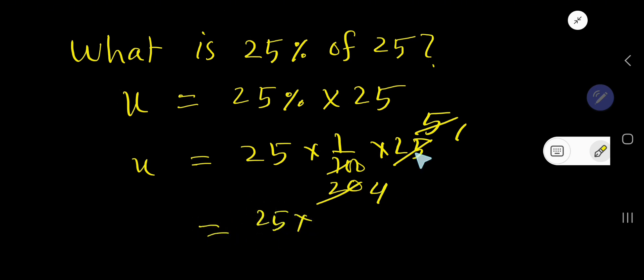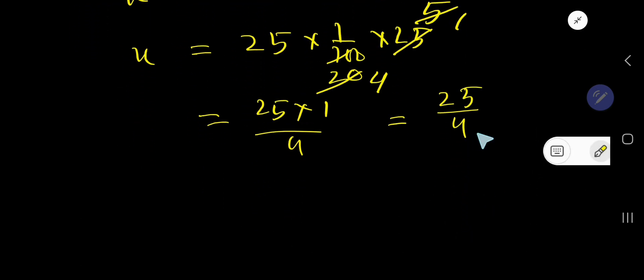So we're getting here 25 times 1 divided by 4, that is 25 divided by 4. Let us divide this.